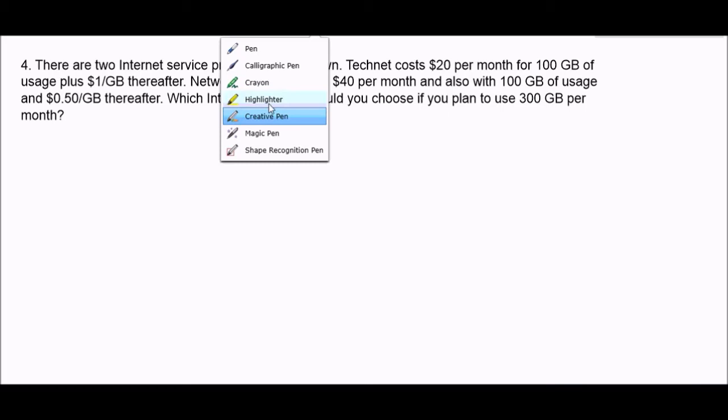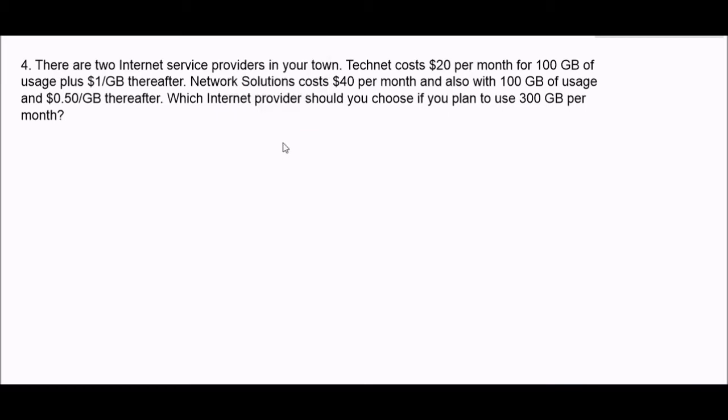It says, there are two internet service providers in your town. TechNet costs $20 per month for 100 gigabytes of usage, plus a dollar per gigabyte thereafter. Network solution costs $40 per month, also with 100 gigabytes of usage, and $0.50 per gigabyte thereafter. Which internet provider should you choose if you plan on using 300 gigabytes per month?